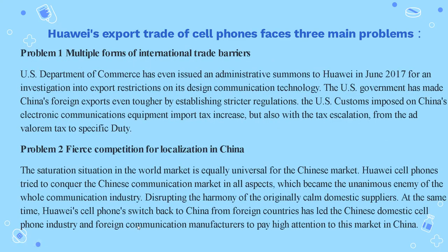Huawei's export trade of cell phones faces three main problems. Problem 1: Multiple forms of international trade barriers. The U.S. Department of Commerce issued an administrative summons to Huawei in June 2017 for an investigation into export restrictions on its design communication technology. The U.S. government has made China's foreign exports even tougher by establishing stricter regulations, and U.S. customs imposed increased import taxes on China's electronic communications equipment, escalating from ad valorem tax to specific duty.